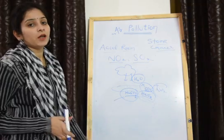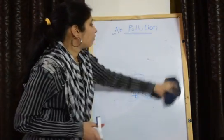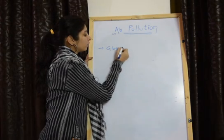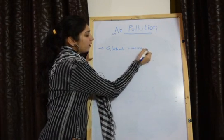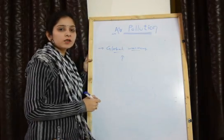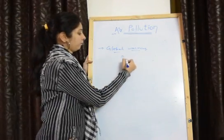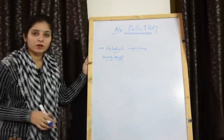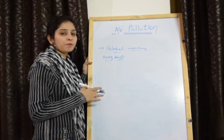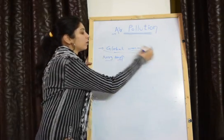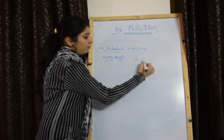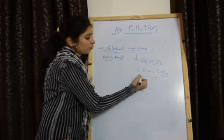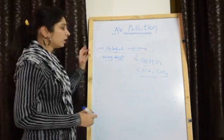Due to air pollution, it can also cause global warming. Whenever the average temperature of the earth increases, it is called global warming. Due to global warming, the sea level will increase and the temperature of the earth will increase. All these occur due to some greenhouse gases like carbon dioxide and methane. Due to these gases, the average temperature of the earth increases.